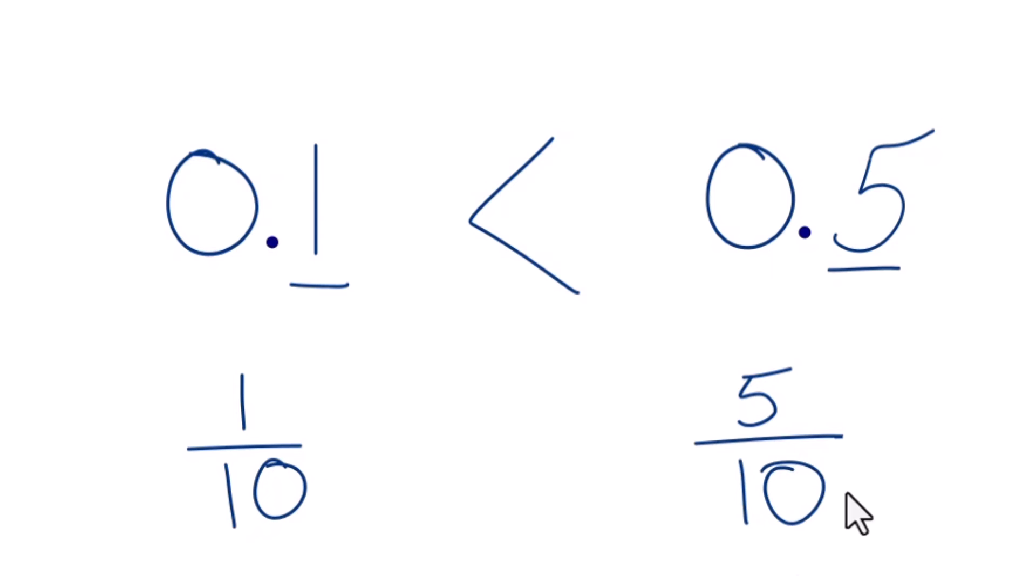And then you can compare these fractions. Because the denominator is the same, we're just going to compare the numerators to see which fraction is larger. So 5 is larger than 1. So 5 tenths is greater than 1 tenth.